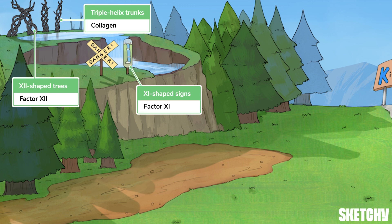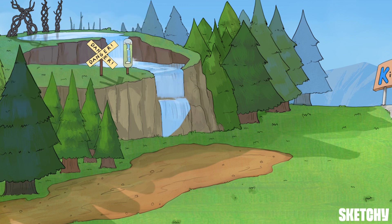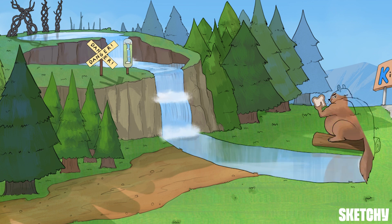But where do these rapids lead? Is there a detour? And what danger lies ahead? Speaking of danger, that's one giant squirrel and he looks hungry for blood. In addition to terrorizing campers, you'll notice he's also shaped like the number 9, because he represents the conversion of factor 9 to 9a, which is catalyzed by factor 11a.